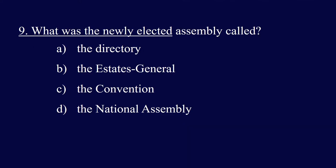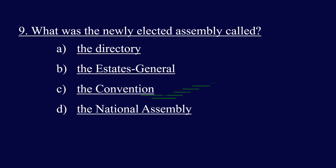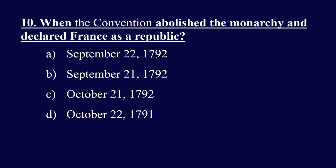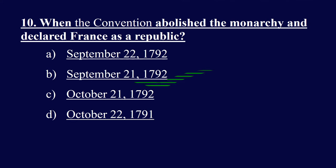Question nine: What was the newly elected assembly called? Options: the Directory, the States General, the Convention, or the National Assembly. The right answer is C, the Convention — the newly elected assembly was called the Convention. Question ten: When did the Convention abolish the monarchy and declare France a republic? Options: September 22, 1792; September 21, 1792; October 21, 1792; or October 22, 1791. The right answer is B, September 21, 1792. After the elections, on September 21, 1792, the Convention ended the constitutional monarchy in France and declared France a republic.